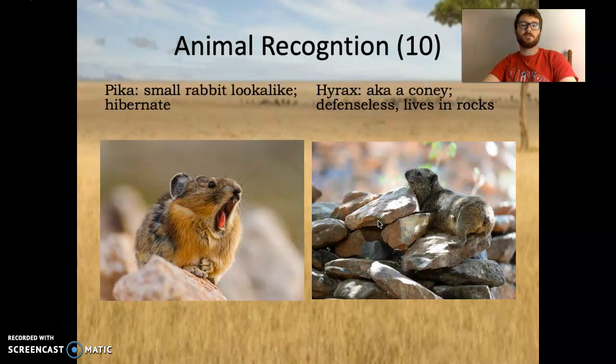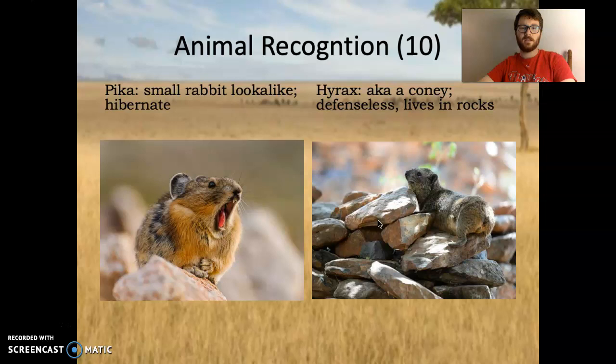Animal recognition — you have the Pika. It sounds like how they got Pikachu, and it actually is. Strangely enough, Pikachu gets its name from this animal. It's a small rabbit lookalike, has the ability to hibernate. It is not a member of Lagomorpha, however, but it does look very similar to a rabbit. And the Hyrax, also known as a Coney — defenseless and lives in rocks. When we start the next lesson, we're going to talk about a biblical lesson we can learn from the Coney.